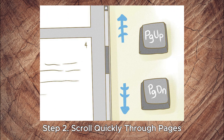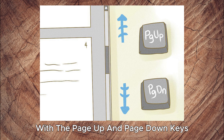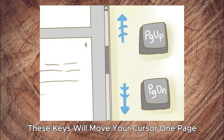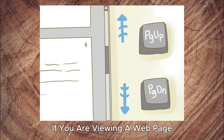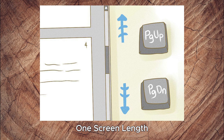Step 2: Scroll quickly through pages. You can quickly scroll through documents or webpages with the Page Up and Page Down keys. If you are using a word processor, these keys will move your cursor one page up or down from the cursor's current location. If you are viewing a web page, these keys will scroll the page up or down one screen length.